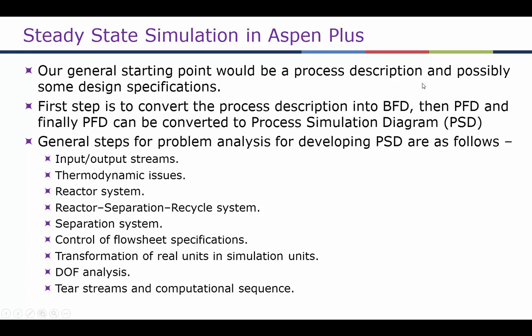We may be given some design specifications such as purity of a stream, or external constraints like EPA guidelines on the composition of the effluent — certain toxic or hazardous chemicals are guided by EPA to be below certain limits. The first step is to make a block flow diagram and then convert it into a process flow diagram, both of which we have covered in the past few weeks.